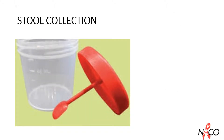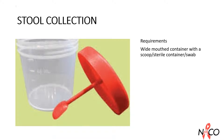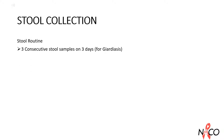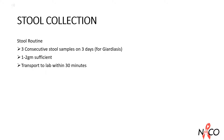Requirements for stool collection include a pre-labelled, sterile, wide mouth container, preferably with a scoop. Because organisms like Giardia may be shed intermittently, collection of specimens at different times over several days enhances the recovery. Therefore, for stool tests, especially for Giardia, patients may be instructed to collect 3 consecutive stool samples on 3 days. 1 to 2 grams of sample is sufficient for processing. Transport to the lab within 30 minutes of collection and tightly cap the container.